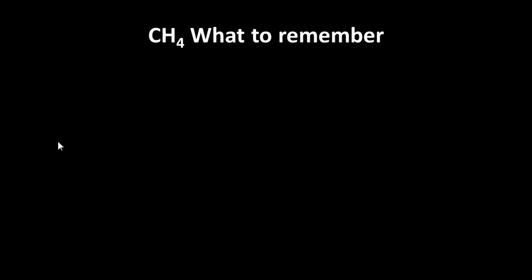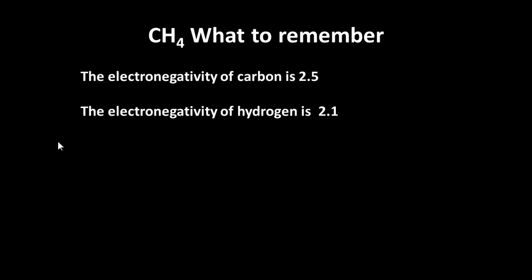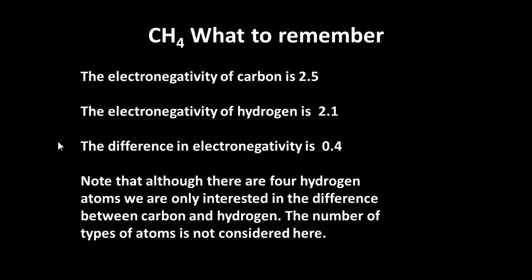Okay, now, don't fall into this trap. It's the difference between the atoms. And here's an example, CH4, methane. The electronegativity of carbon is 2.5, electronegativity of hydrogen is 2.1. So the difference is 0.4. And that's the only difference we're concerned with. Forget the fact that you've got four hydrogen atoms. The number of the types of atoms is not relevant. This is a polar covalent bond.